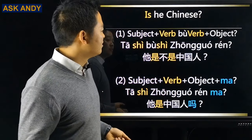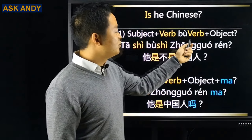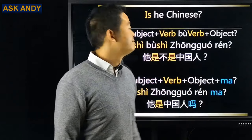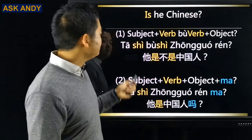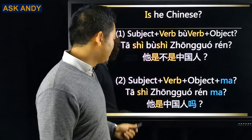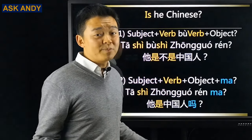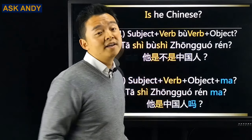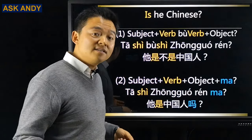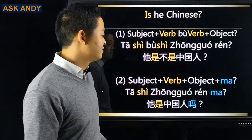Is he Chinese? We have another two patterns. Pattern one would be subject plus verb plus 不 plus verb plus object. So that is 她是不是中国人? And in pattern two, it is 她是中国人吗? Which one is better for you to use? The same — I recommend you to use pattern one. Because 是 is also a monosyllabic verb that will be easier for you to get and understand at the very beginning. So that will be 'is or not is.'